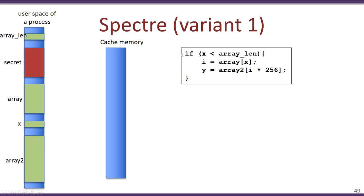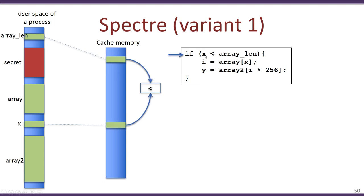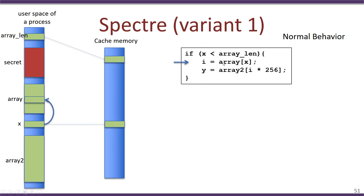Let us see how execution of this snippet takes place under normal circumstances. When the if-statement line executes, two load instructions occur — one for x and one for array_len — loading both into registers and also into cache memory. A comparison is then made between x and array_len. If x is indeed less than array_len, the if-condition is entered, x is used to index into the array, and one block of data corresponding to array[x] is loaded into cache.